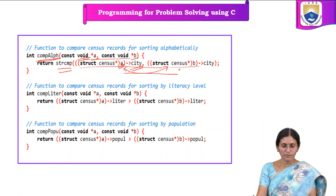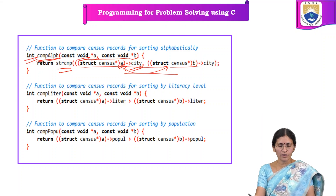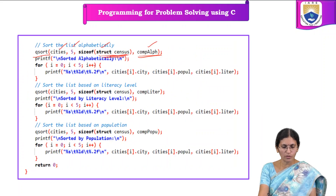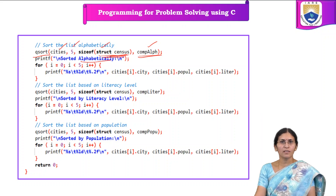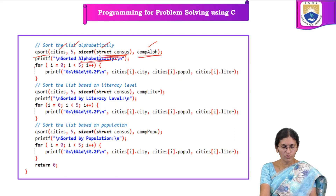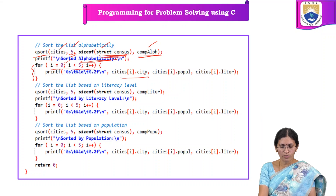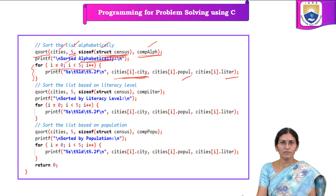If the return value is zero, the two strings are equal. Based upon the return value, we can say whether those two strings are equal or not. After sorting, in order to display the sorted list, we use a for loop — since we have data for 5 cities, we print the data of all 5 cities. The qsort method takes: the cities array, the size of the array, the size of each data type, and the comparator function.